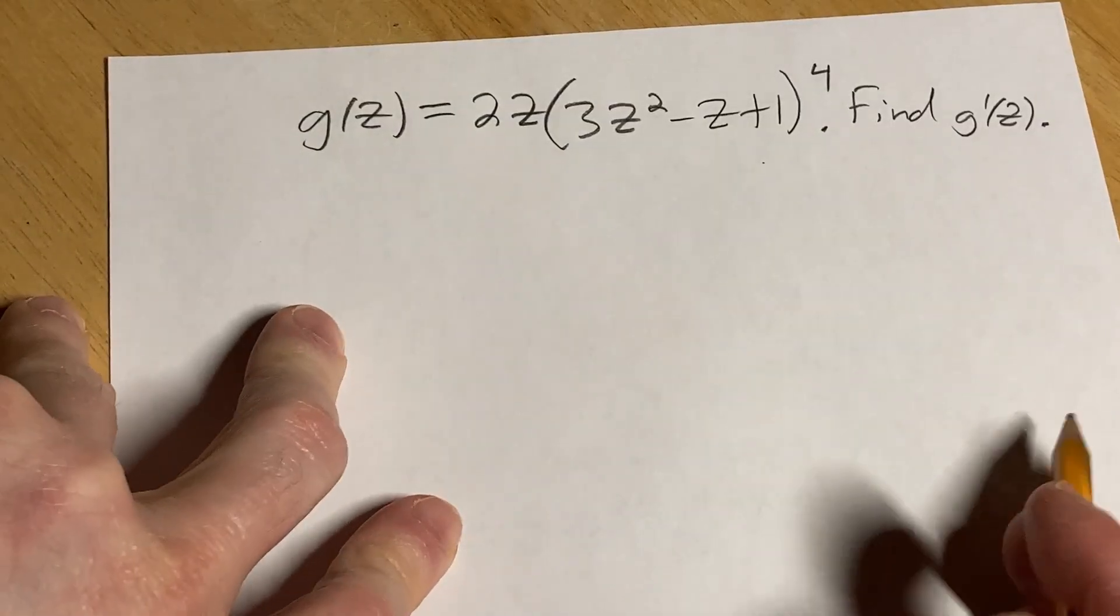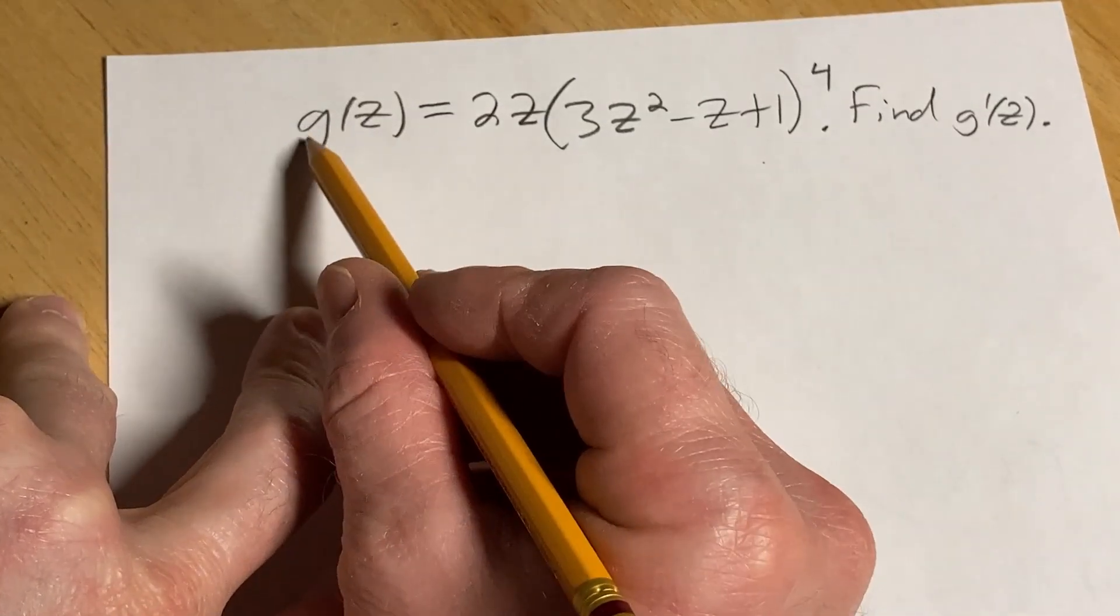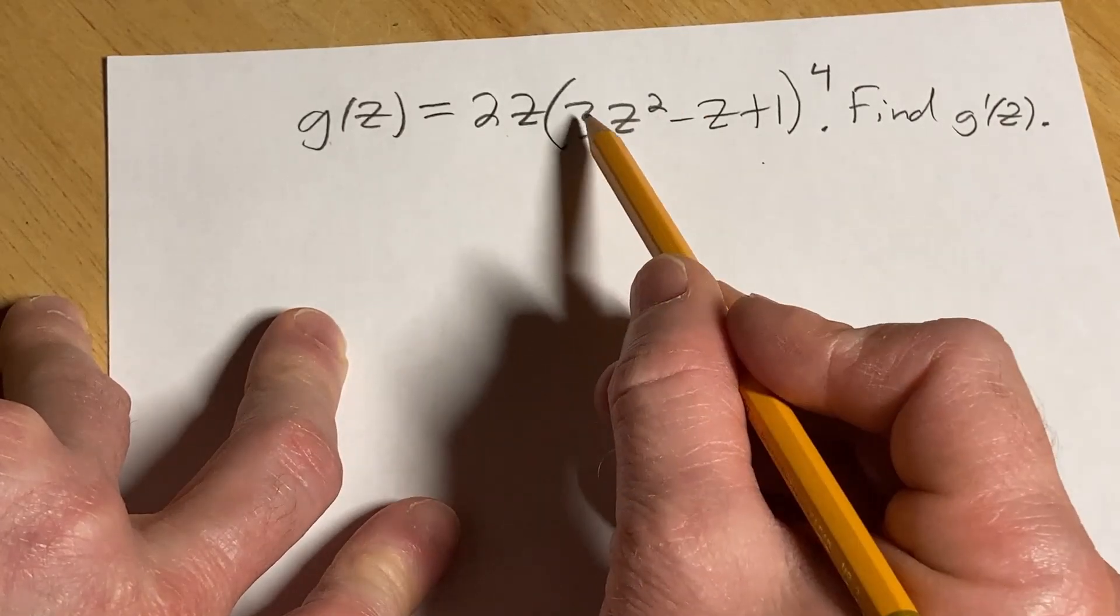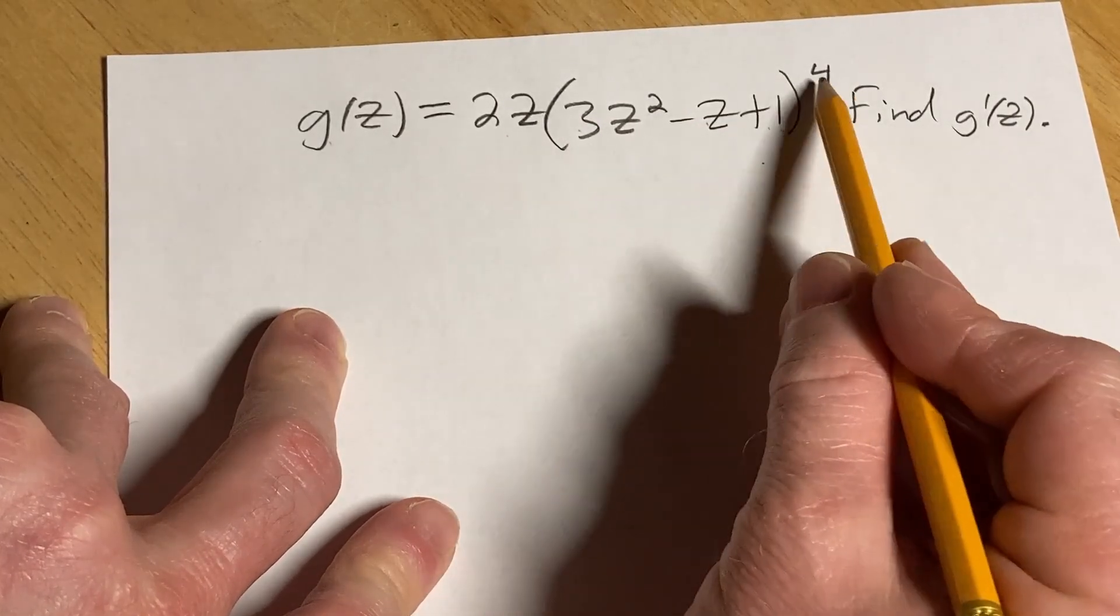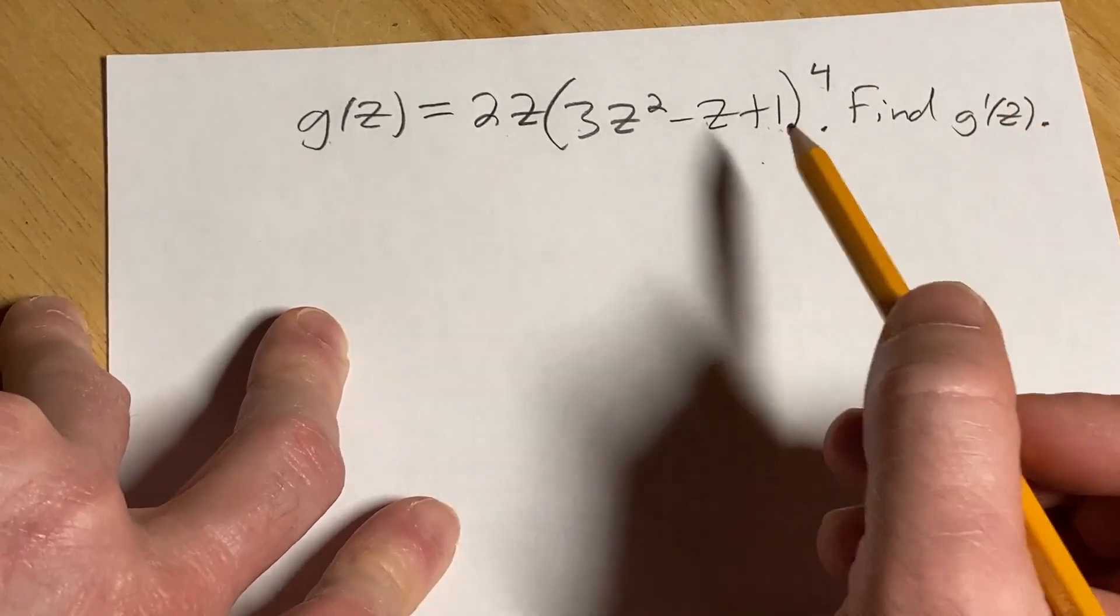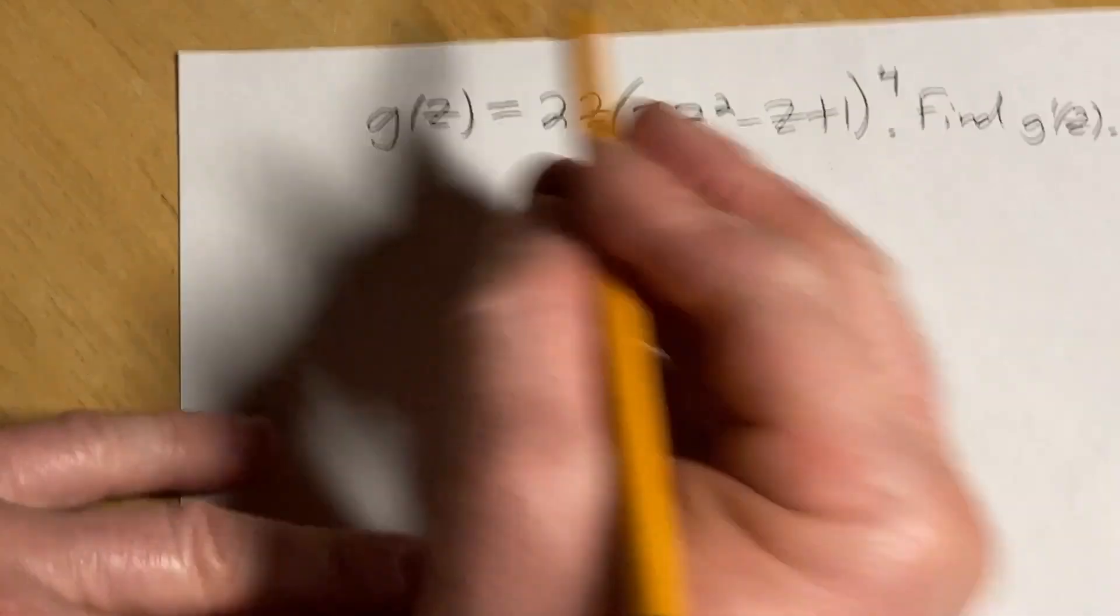Hello, in this video we're going to do some calculus. We're going to find the derivative of this function g of z. It's equal to 2z times 3z squared minus z plus 1, and the whole thing is to the fourth power. And the question is to find g prime of z, which is the derivative. Let's work through it.